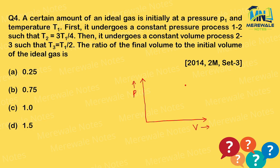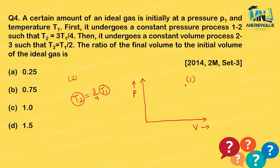Process 1 to 2 is a constant pressure process. The second temperature T2 equals (3/4)T1, meaning temperature decreases. For a constant pressure process using the ideal gas equation, V1/T1 = V2/T2, so volume is directly proportional to temperature. Since temperature decreases, volume also decreases — the arrow on the diagram moves left.